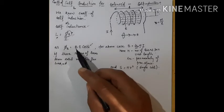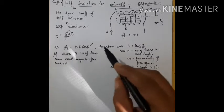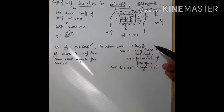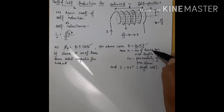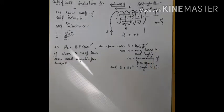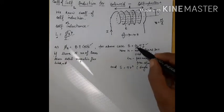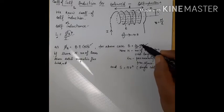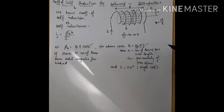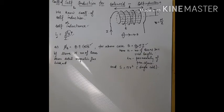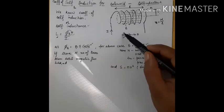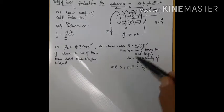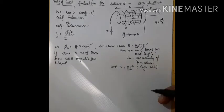Here the magnetic field B for a solenoid is μ₀·n·i, where μ₀ is the permeability, n is the number of turns per unit length, and i is the current. Also, the surface area of a single loop is π·r².